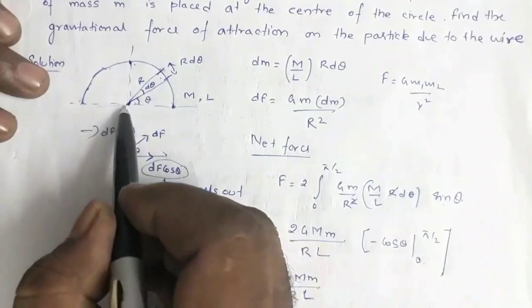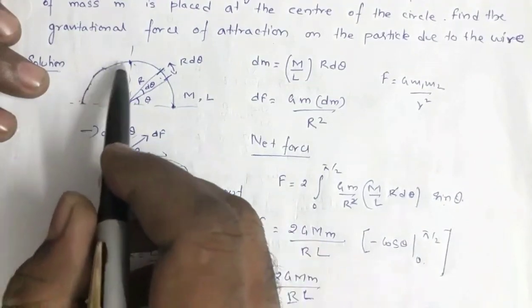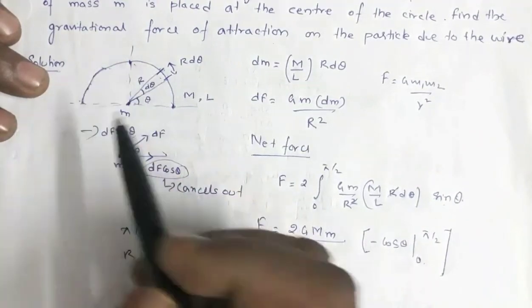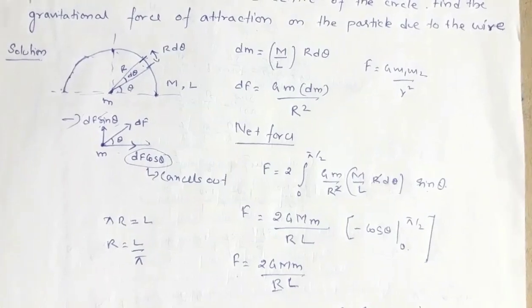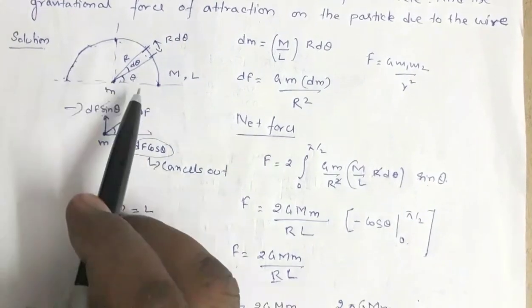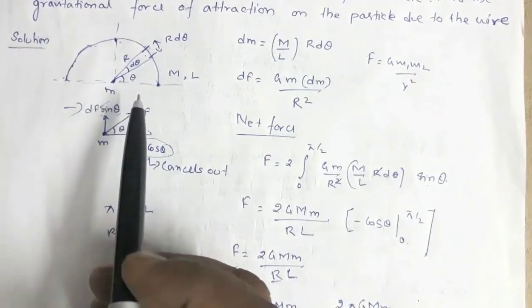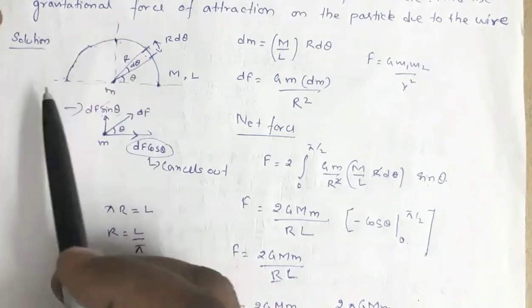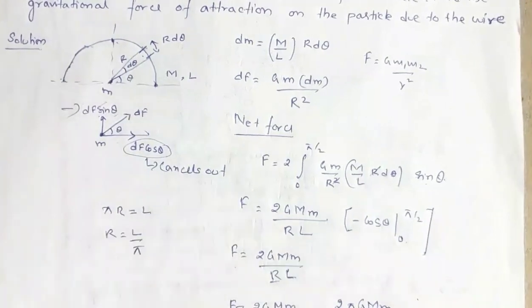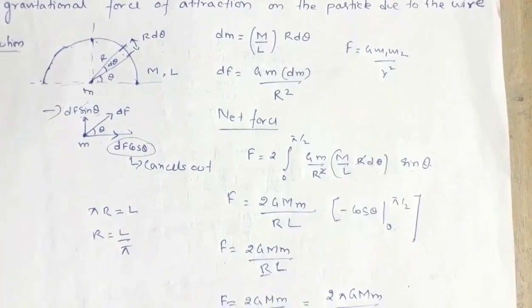So the expression for the gravitational force between the semicircular wire and the point mass m at the center is F = 2πGMm / L². This mass at the center is a point mass and the wire is an extended body. This is how you calculate the force between an extended body and a point mass — a similar technique can be used for two extended bodies. I hope this video is clear to you. Thank you.